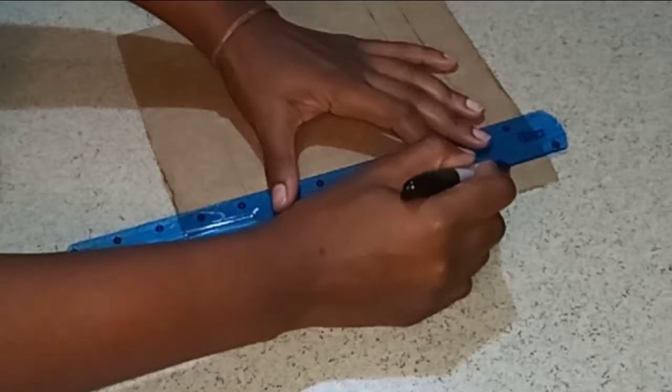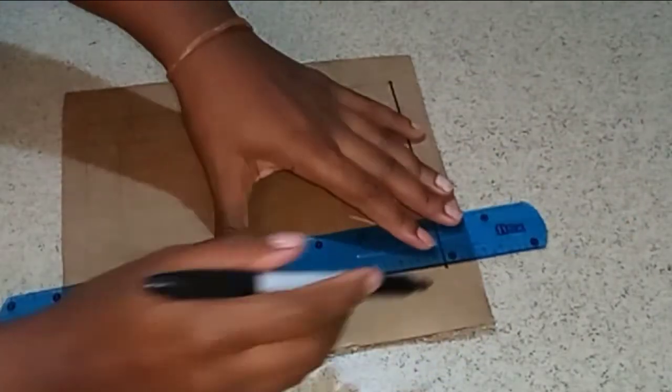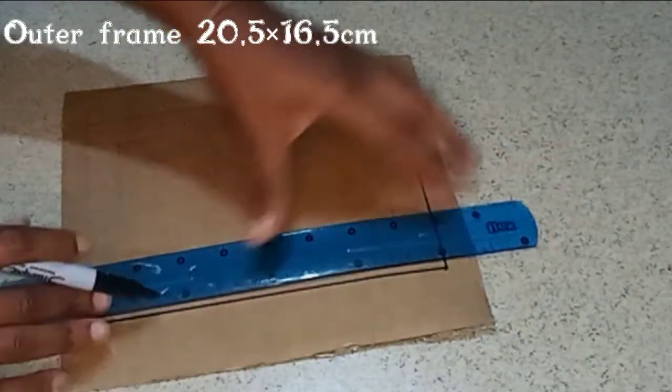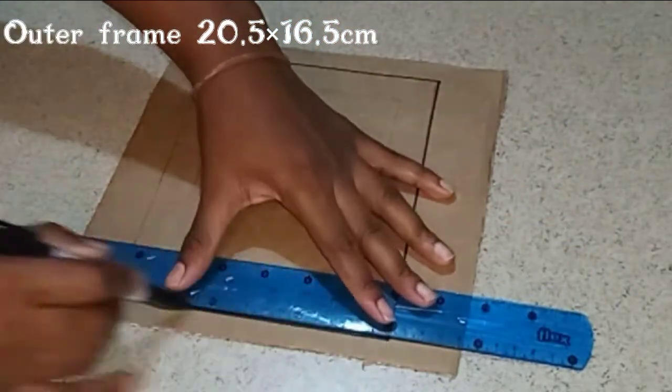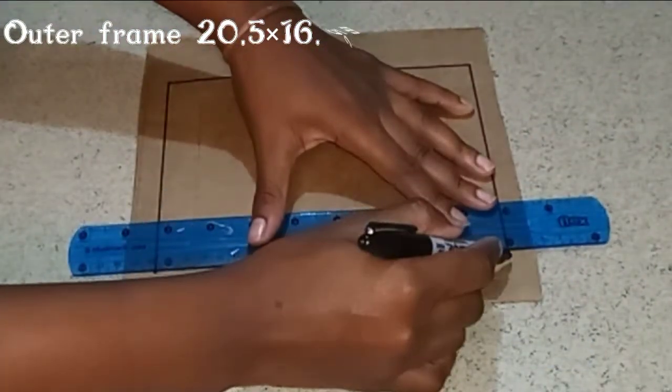We're starting with this piece of cardboard and we're going to be drawing our photo frame. For the outer frame I went in with length of 20 and a half centimeters and width 16 and a half centimeters.